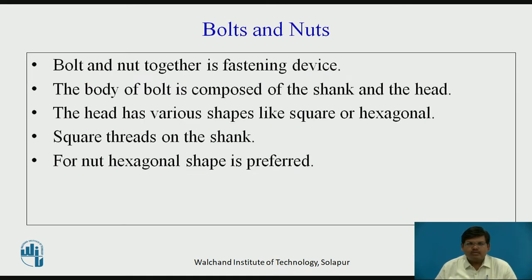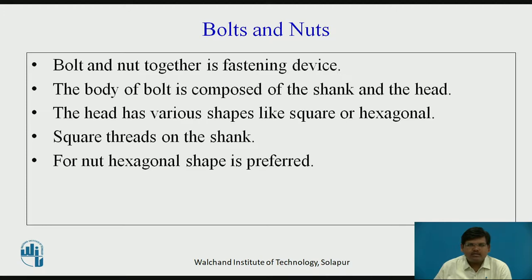What are bolts and nuts? Bolt and nut together form a fastening device. There are various methods used to join different components. Out of that, nut and bolt arrangement is the most widely used and of low cost. The other types of joining devices or methods are riveting, screws, and couplings, but bolt and nut is the most widely used. The smaller part is called the nut and the larger part is called the bolt.